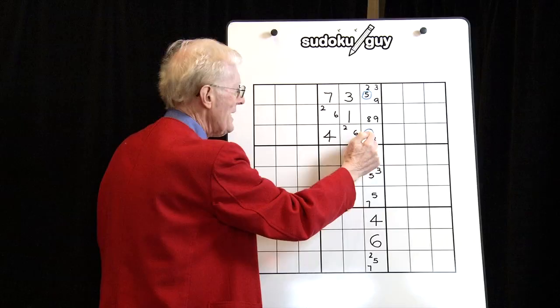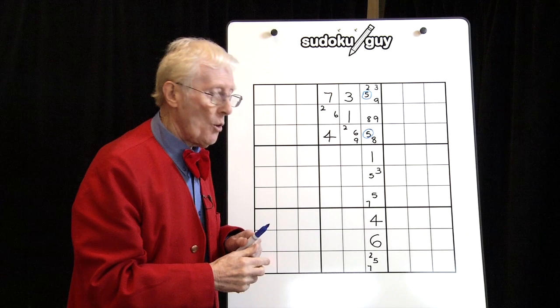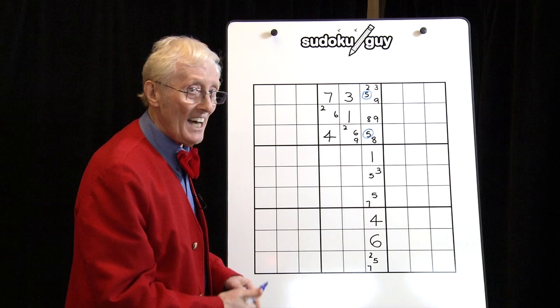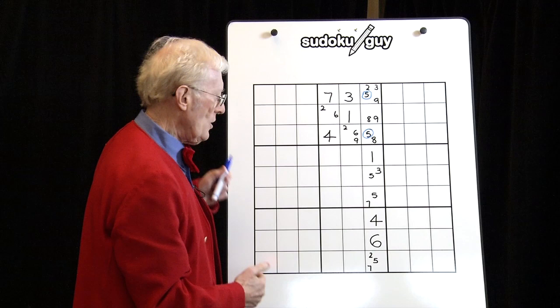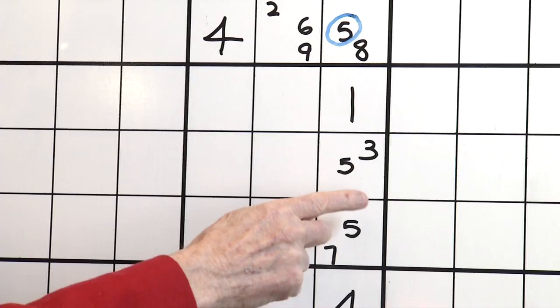If those are the only places in this block that have a five, one of these fives must be the real big five. And if that's the case, we can exclude, remove, eliminate, get rid of any other five that happens to be down here in that column. And if I look at that, I see several fives. Let's look at, just for fun, we'll go in order. We'll take this one first. If I get rid of this five here, we now finish up with a big three.